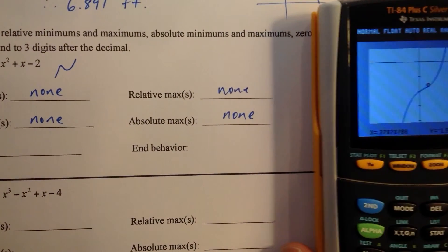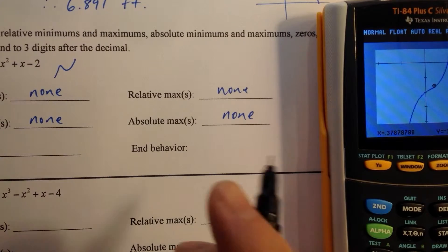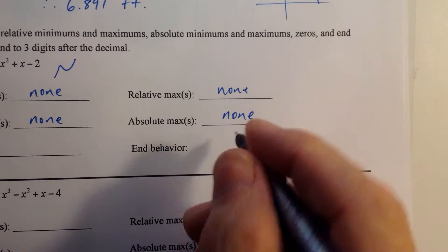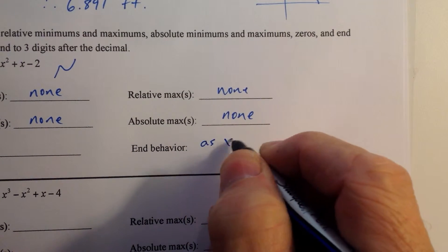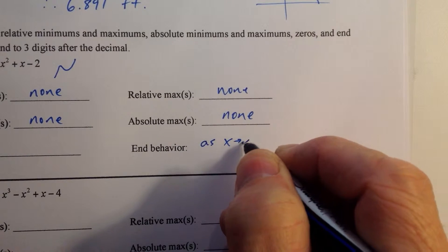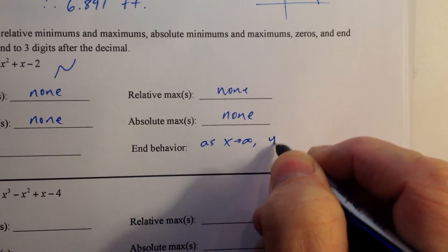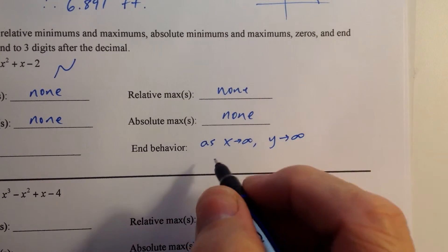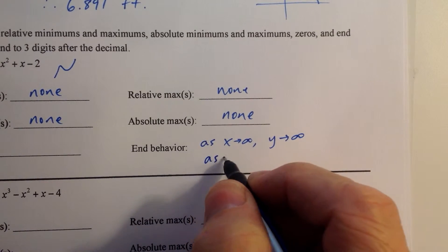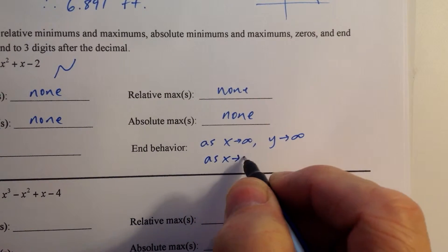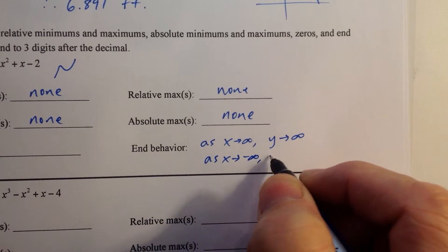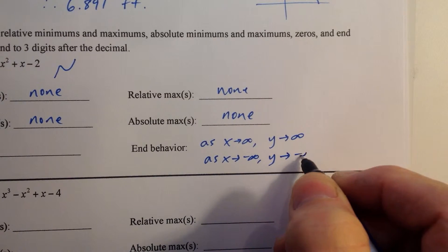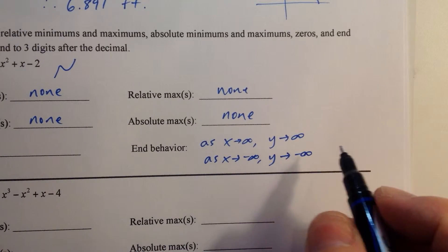For end behavior, as x approaches infinity, y also approaches infinity. As x approaches negative infinity, y also approaches negative infinity. That's typical with third degree polynomials.